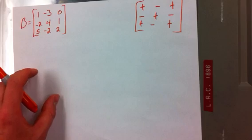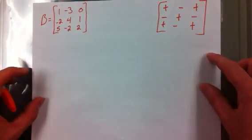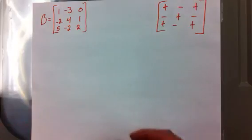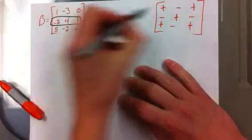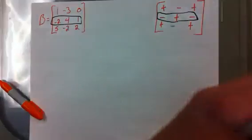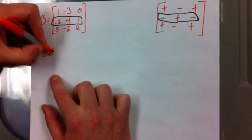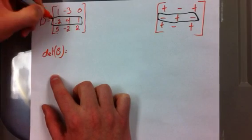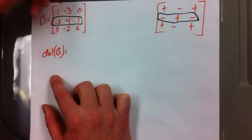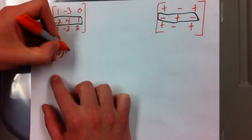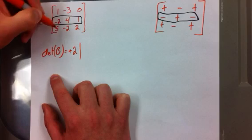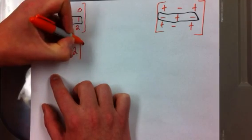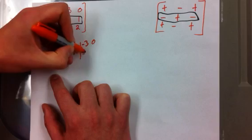Now let's move on to another example. We can do this along a different row or column on the cofactor expansion. So we have another matrix, and this time let's go along the second row — these are going to be our cofactors. The determinant of B is equal to: we have negative two as our first cofactor, but it has a negative sign in the pattern, so we actually get a positive two. Then you ignore the column and row it's in, so we have negative three, zero, negative two, two.